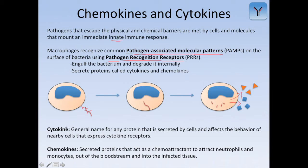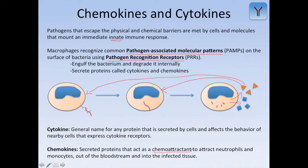Cytokines and chemokines are often mistaken for each other. Cytokines are a general name for any protein secreted by cells that affects the behavior of nearby cells expressing cytokine receptors — they can signal cells nearby, including the secreting cell itself, to mount an innate immune or inflammatory response. Chemokines, however, are secreted proteins that act as chemoattractants — the key word — to attract neutrophils and monocytes out of the bloodstream and into the infected tissue.